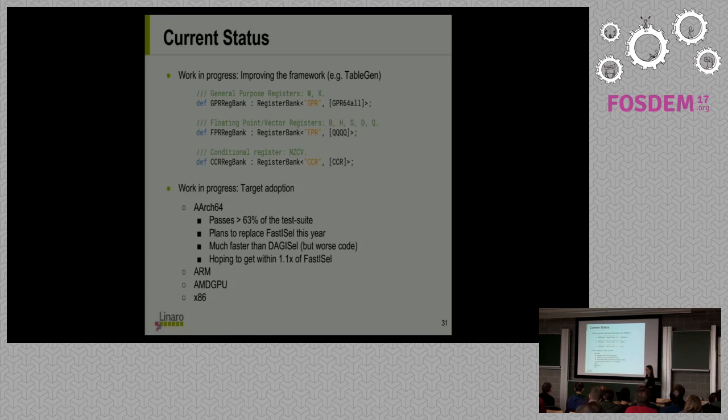Another front where we're working hard is target adoption. Since this was developed initially for AArch64, that's naturally the one where it's progressed the most. It now passes over 60% of the test suite without falling back to selection DAG. There are actually plans to replace Fast iSel for O0 this year. At the moment, it's naturally a lot faster than selection DAG because it's not doing as much. For instance, all those combines, we're not doing that. We're not selecting anything too complicated. At the moment, the instruction selection in Global iSel is not very intelligent. We're trying to replace Fast iSel, which is just generally the simplest thing possible. The hope is that, in the end, it will get within 1.1x of Fast iSel. There's work going on here, especially at Apple. We're trying not to step on their toes too much. We're letting them do their work.